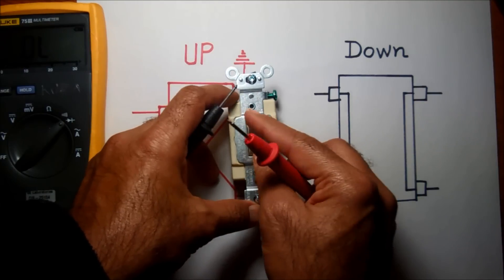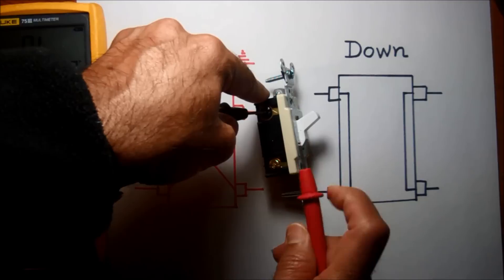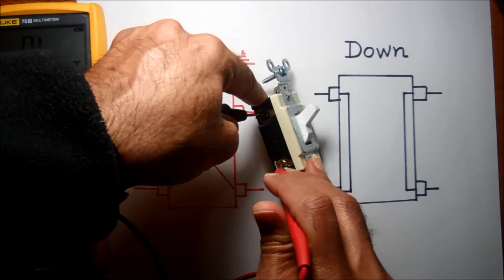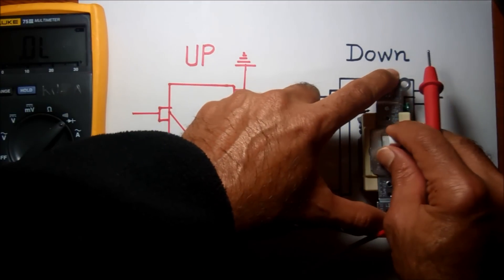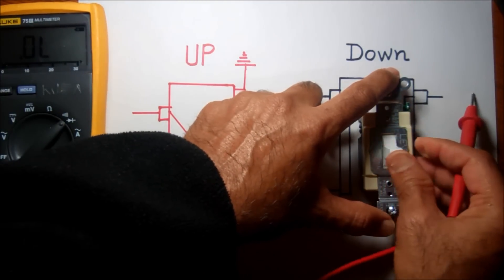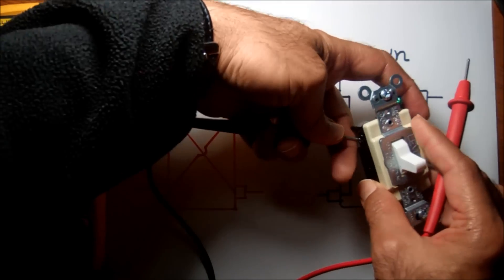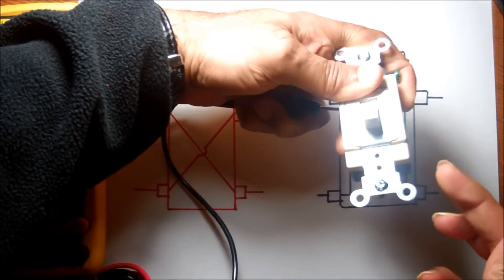Now if I test in the same position, if I try to test these two connections, it won't show. Now once I put it in the down position, when the switch is in the down position, these two will make the connection. So now I want to make connection from here to here.